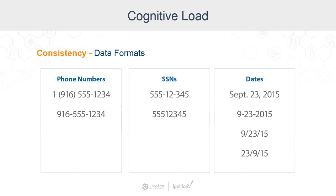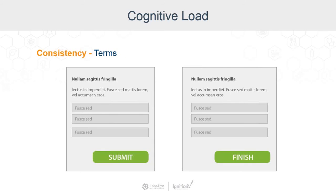Make sure that your number types are consistent. Common ones are phone numbers, socials, and dates. Dates are especially bad because everyone seems to have their own style. There are also international considerations, because in other countries the month and date are flipped. And if two buttons have the same action, try and use the same terminology — having different words for the same action can be very confusing to your user.